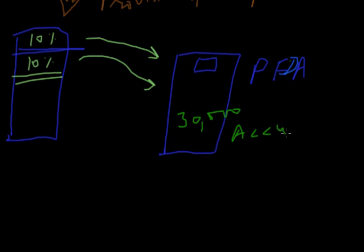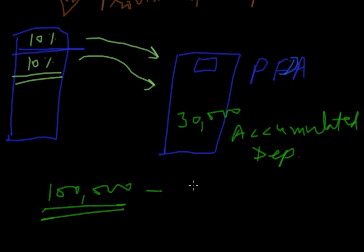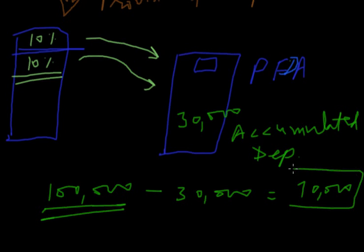So in the third year, if we sold the asset, we deduct all the depreciation from the asset. Asset minus provision for depreciation account 30,000 — this amount will be used for calculating profit or loss from the sale of the asset.